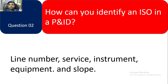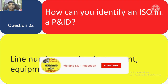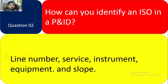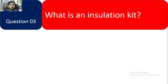Question 2: How can you identify an ISO line in a P&ID? In a P&ID, you check the line number, service, instrument, equipment, and flow. Checking these things will allow you to definitively identify an ISO line. Question 3: What is an installation kit?